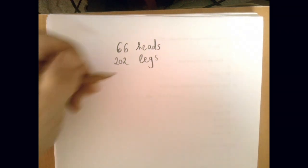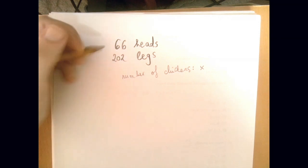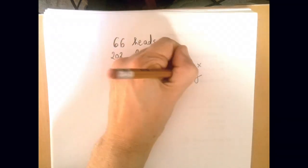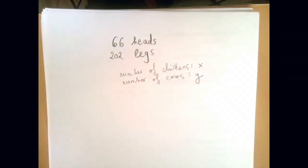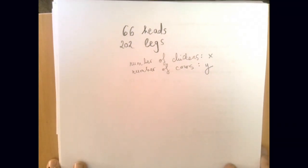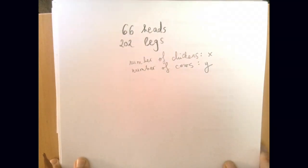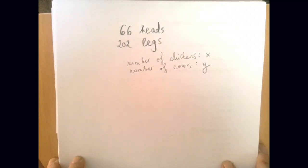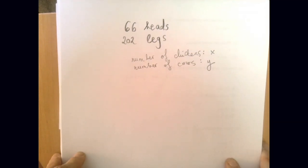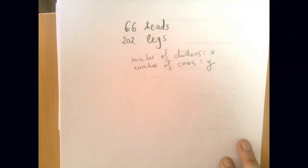If we call the number of chickens x and the number of cows y, that already shows we are committed to applying a system of linear equations. This problem very naturally lends itself to systems of linear equations. We have two unknowns now, the number of chickens x and the number of cows y, and so we need to have two equations.